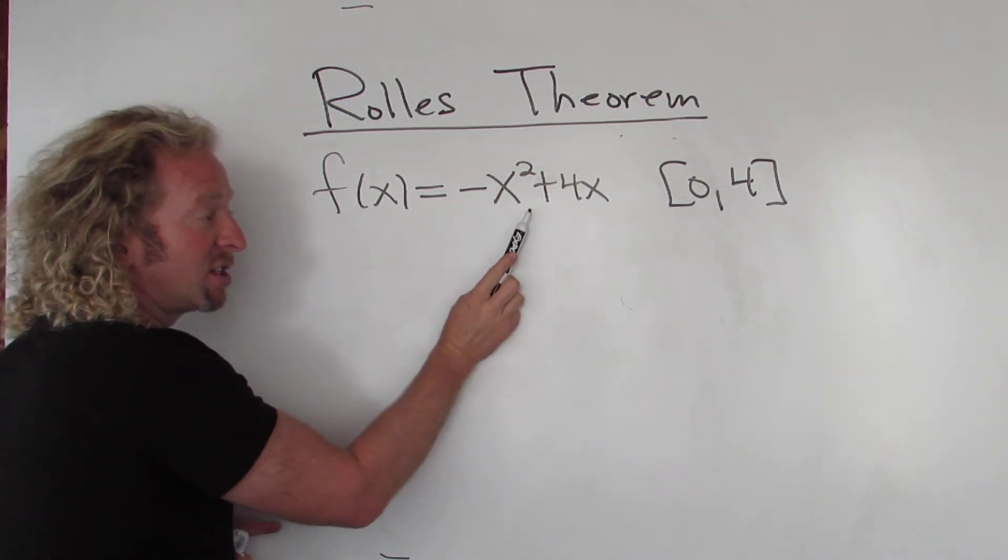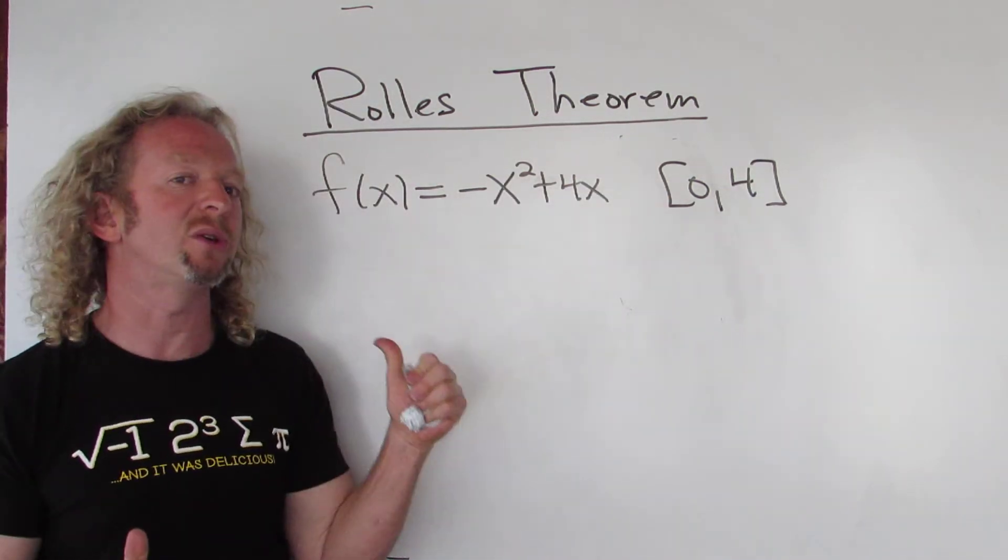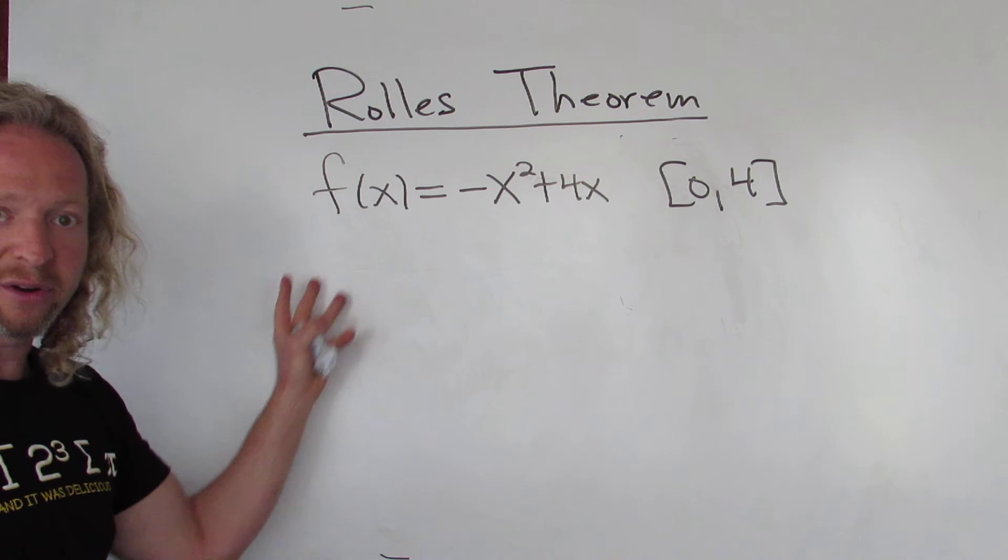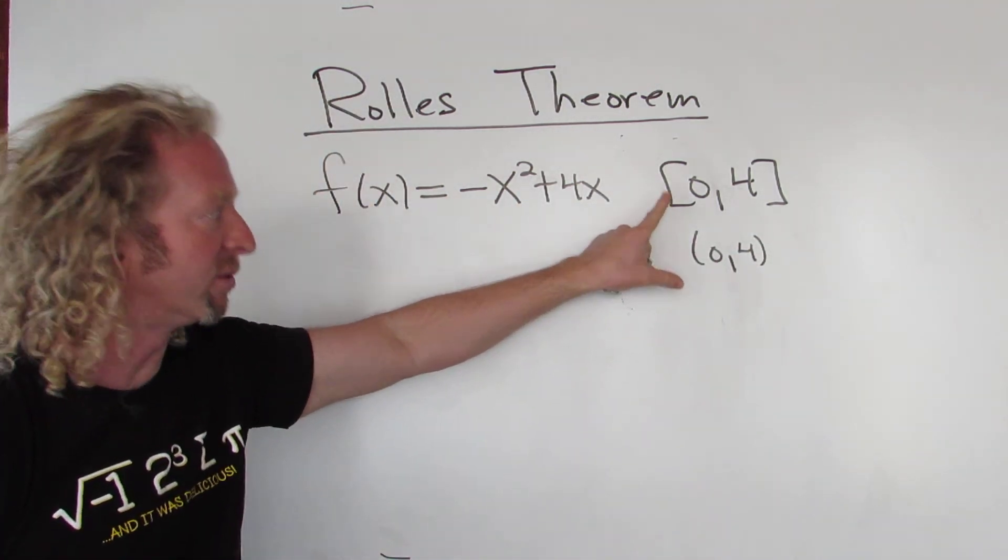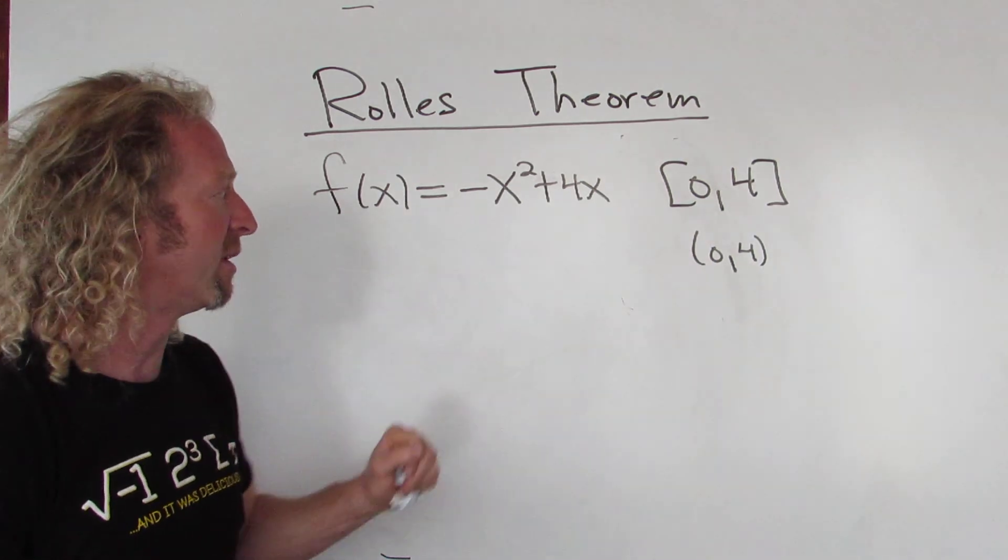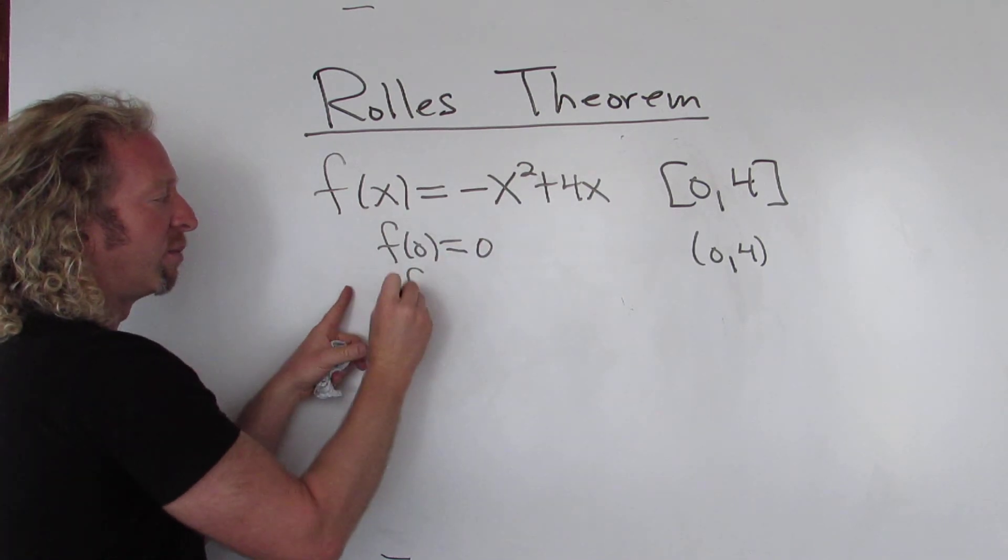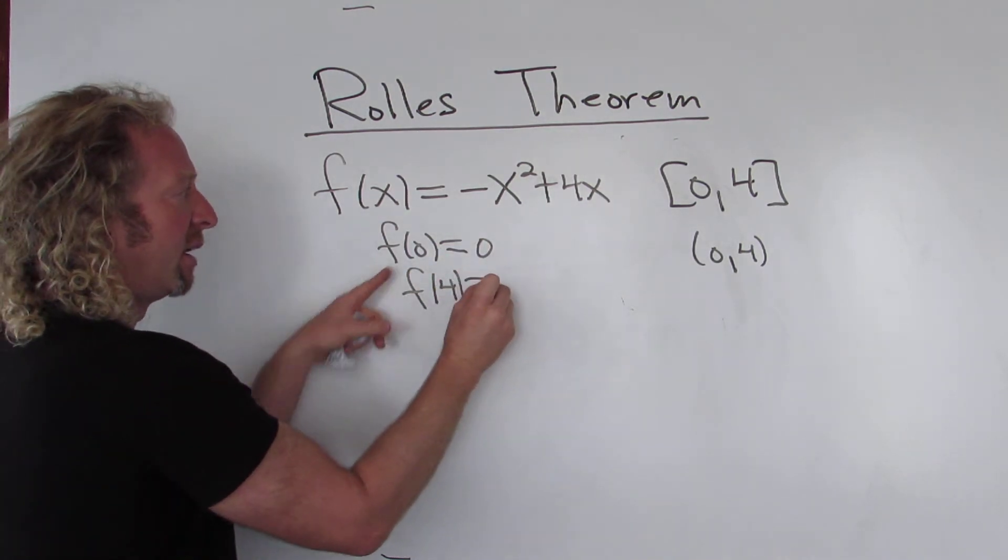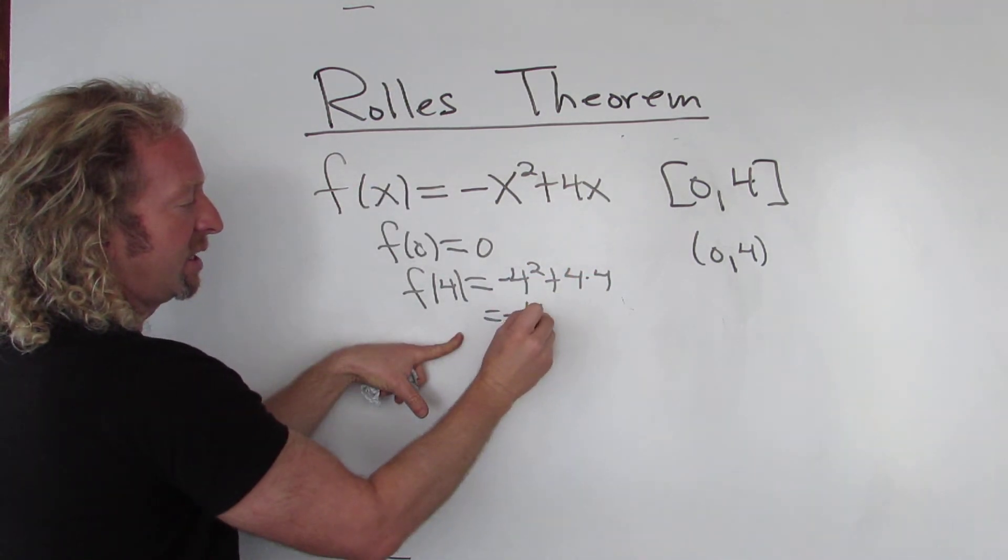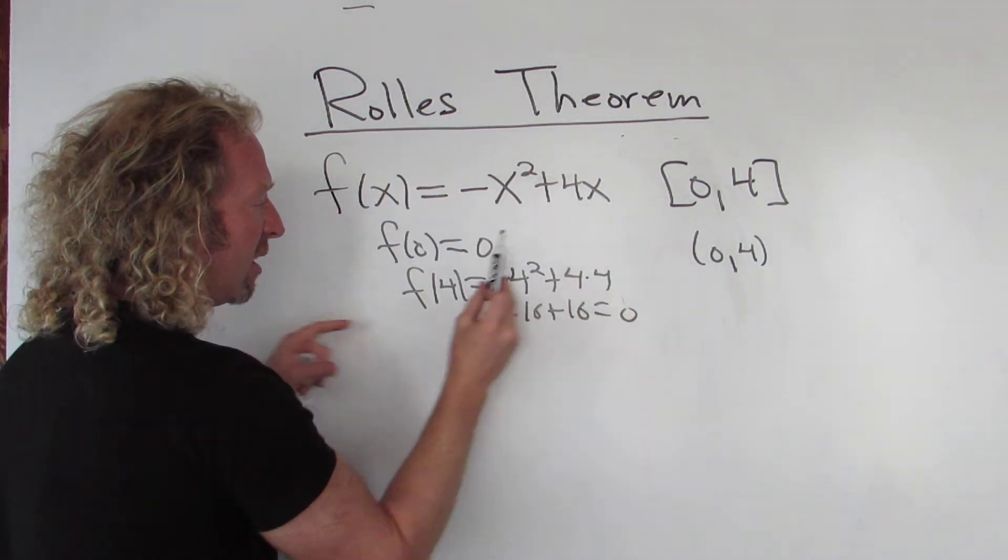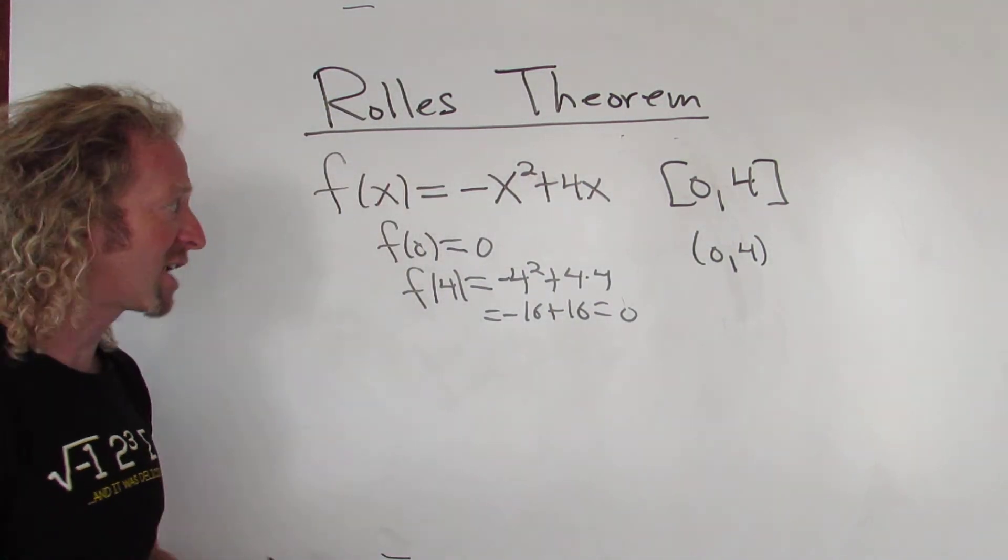By the way, this function is continuous, right, because it's a polynomial. So it's continuous everywhere. In particular, it's continuous on this closed interval. It's differentiable everywhere. In particular, it's differentiable on the open interval. So it's continuous on the closed interval, differentiable on the open interval. And you can check. You can plug in 0, you get 0. You can plug in 4, if I did it right. It would be negative 4 squared plus 4 times 4. This is negative 16 plus 16. So it's equal to 0. So f(4) is equal to f(0). So all three conditions in Rolle's Theorem are satisfied.